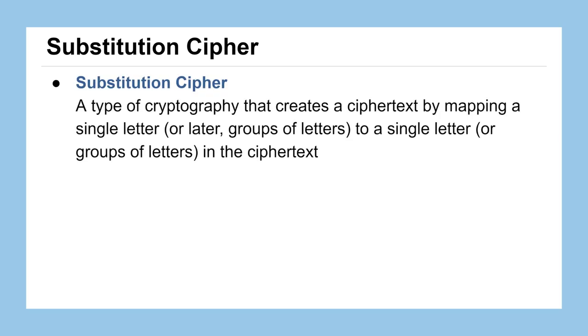In general, we're going to call a substitution cipher any type of cryptography that creates a ciphertext by mapping a single letter, and later on in the course we'll see this can be done with groups of letters as well, to a single letter or groups of letters in the ciphertext. So we're mapping a single letter to a single letter.